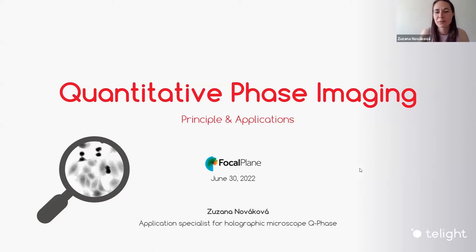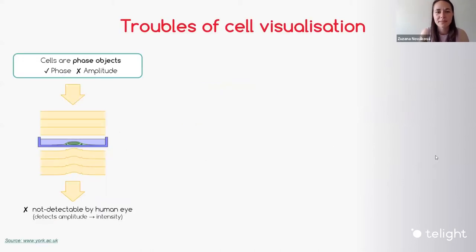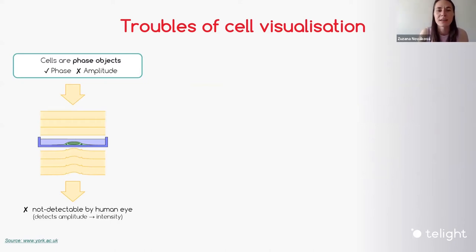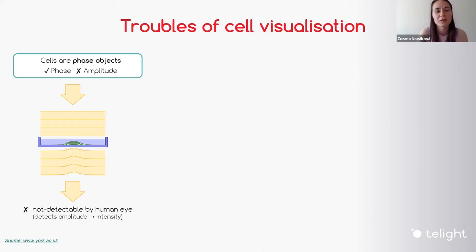Starting from the beginning, there is a trouble when you want to visualize cells, because cells are phase objects. It means that in the world of light transmitting light microscopy, the light changes its phase when it passes through the cells, not its amplitude. Therefore these objects appear transparent and they are non-detectable for human eyes.